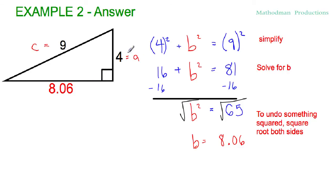So my first step was to plug every information that I have into the Pythagorean theorem. a is four, b was missing, and c is nine. From here, simplify, and you get 16 plus b squared equals 81.